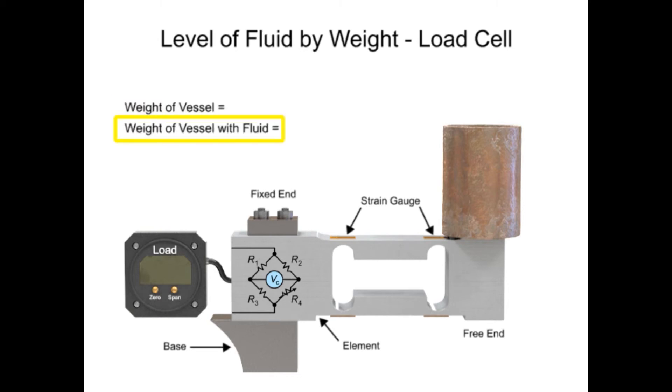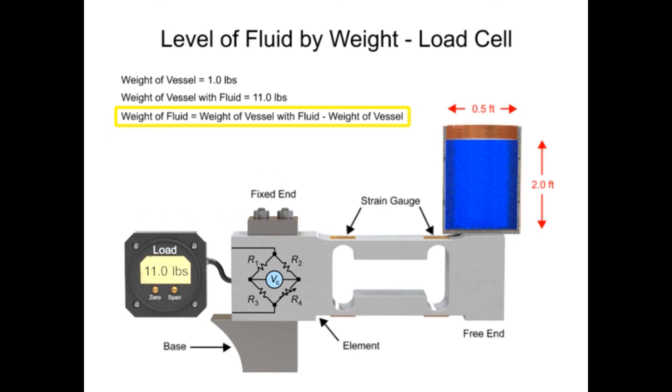An example: To determine the level measurement of a column of water that is 2 feet tall and diameter of 0.5 feet is solved by the following steps. The first step is measuring the weight of the vessel. Next, measure the weight of the vessel with fluid. The weight of the fluid is determined by subtracting the weight of the vessel from the weight of the vessel with fluid.